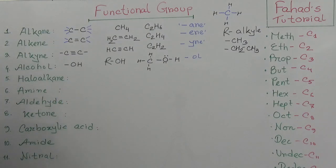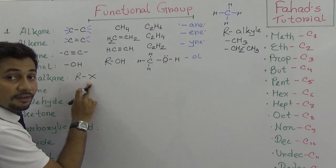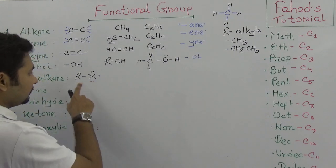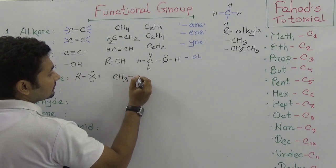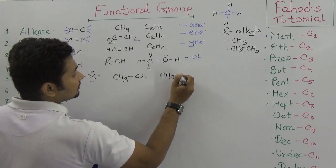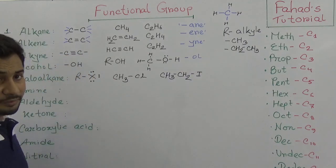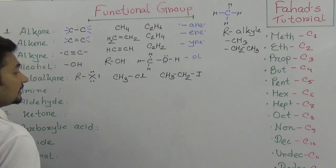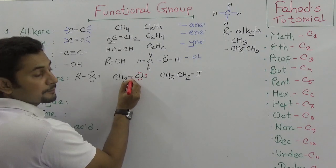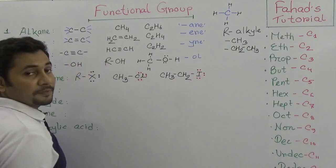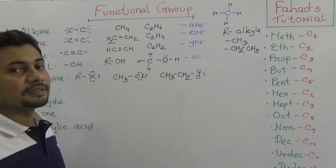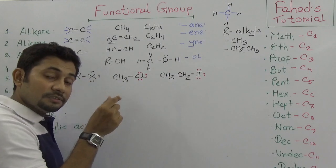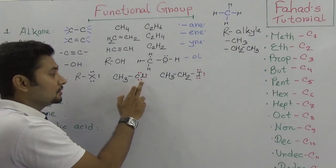Haloalkane means that after the alkyl group there is a halogen. In the Lewis structure it has three lone pairs of electrons outside. We can write CH3Cl or CH3CH2I, because chlorine, iodine, and bromine are all halogens. You can say methyl chloride or chloromethane — this is a haloalkane with a carbon-carbon single bond but with a halogen group attached to the carbon.